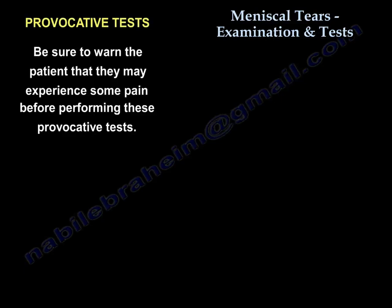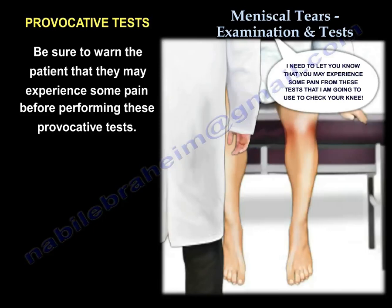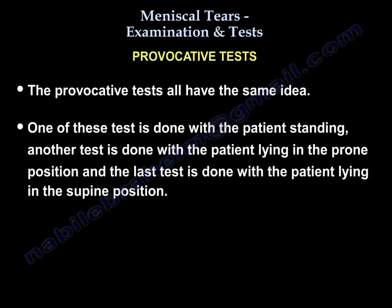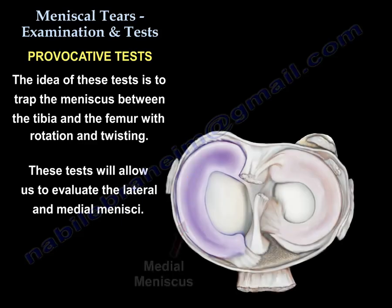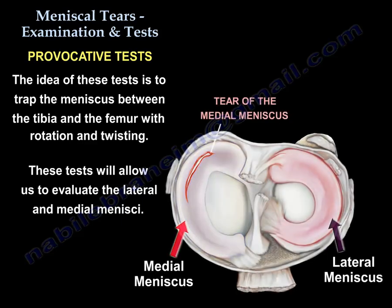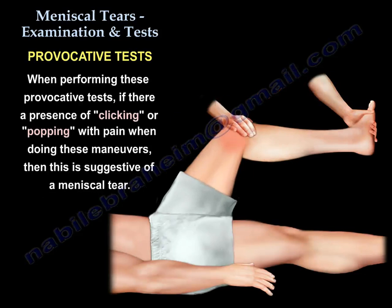You may warn the patient that they may experience some pain. The provocative tests all have the same idea — one is done standing, another is done prone, and another is done supine. The whole idea is to trap the meniscus between the tibia and the femur with rotation and twisting, which allows us to evaluate the lateral meniscus and the medial meniscus. If you get a click or a pop with pain when you do this maneuver, that is suggestive of a meniscal tear.